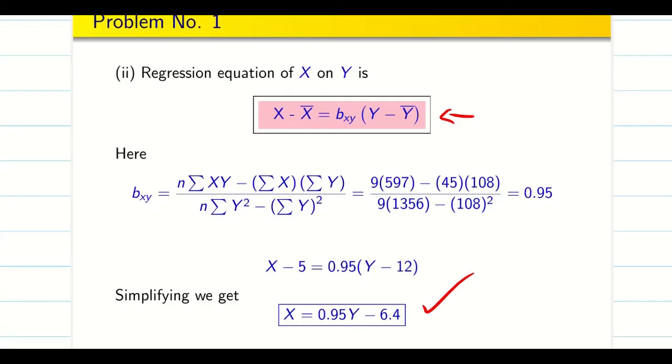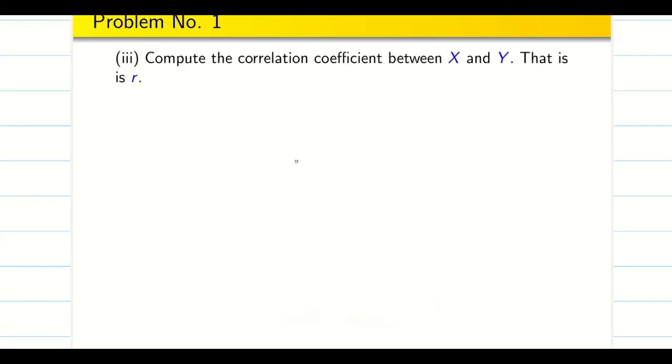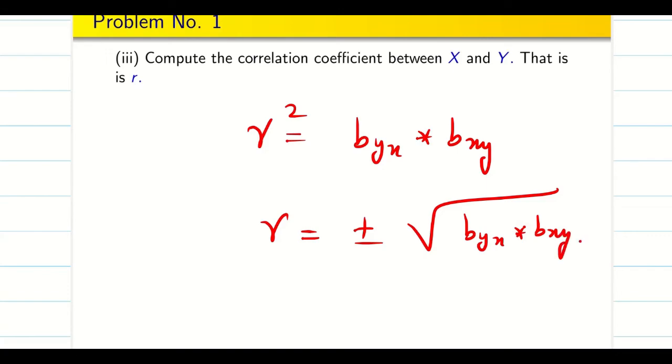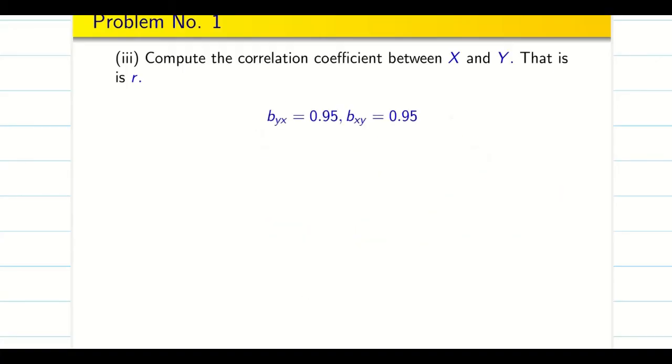Next we have to find the correlation coefficient. We see the relation: r² is equal to byx into bxy. I want r. r is equal to plus or minus root of byx into bxy. We see the properties: if both bxy and byx are positive, r is positive. If both of them are negative, then r is also negative. In our case, both are positive. byx and bxy is 0.95.